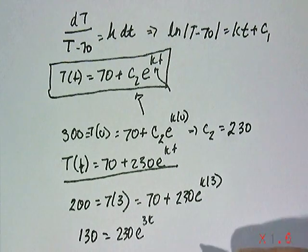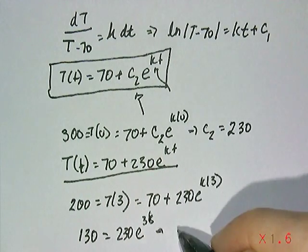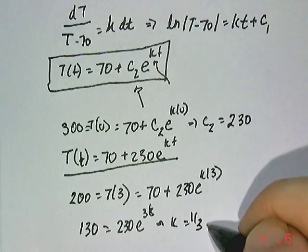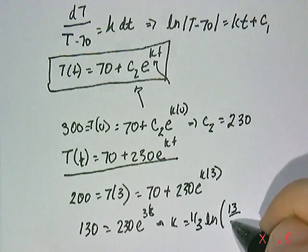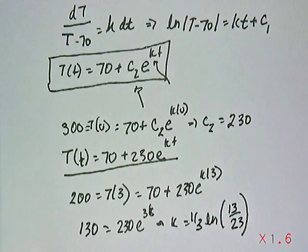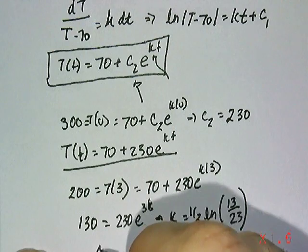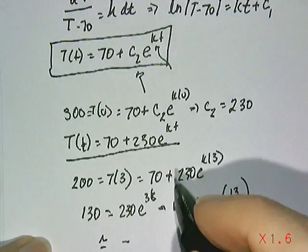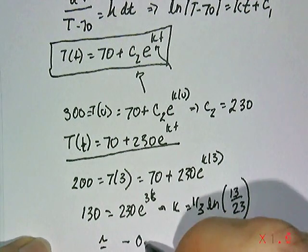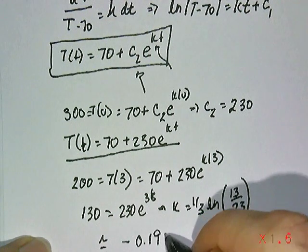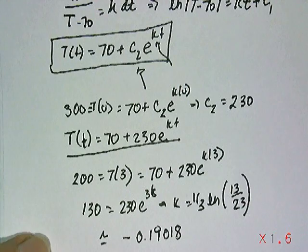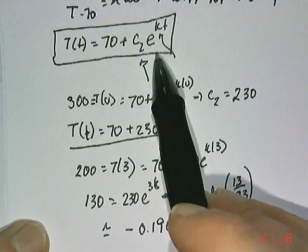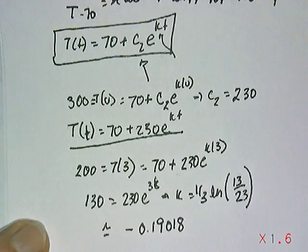Then, using logarithms, you can show that k would have to be one third the natural log of 13 over 23. And that's going to be about equal to negative 0.19018, which makes sense, because we need to have this decay down to zero, so that the solution eventually will go to 70.